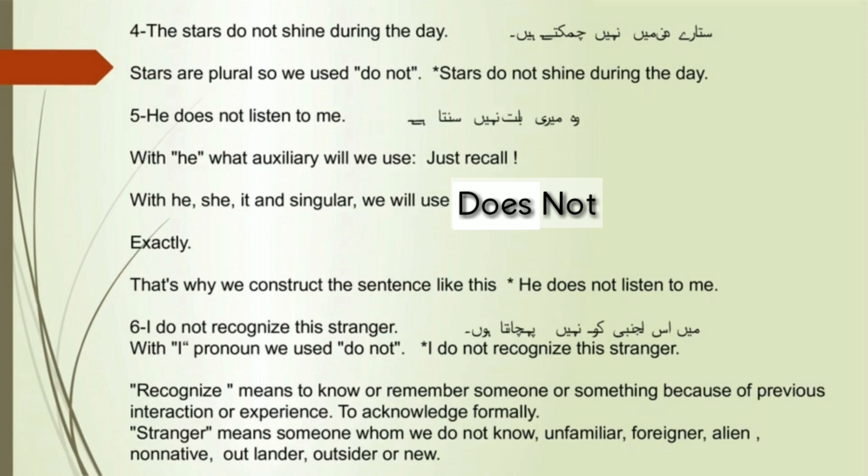Sentence 6: Pronoun is I, so we used 'do not.' I do not recognize this stranger. Recognize means to know or remember someone or something because of previous interaction or experience, or to acknowledge formally.